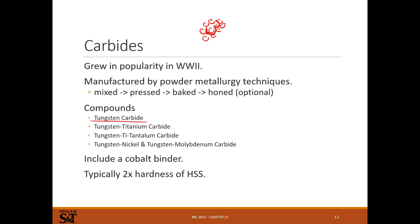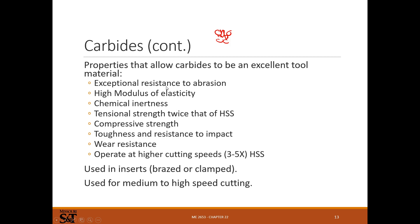Tungsten carbide is the most common, with a cobalt binder as the matrix. It has around twice the hardness of high speed steel, excellent resistance to abrasion — it doesn't wear as fast as high speed steel — a high modulus of elasticity so it's very stiff and doesn't change geometry. It's chemically inert in machining environments. The yield strength is roughly twice that of high speed steel. Good compressive strength too because of the matrix — and because of the metal matrix, it has a high tensile strength as well, as opposed to a pure ceramic.